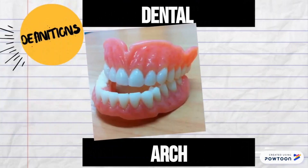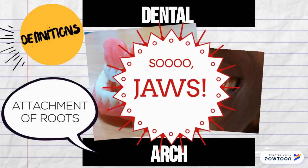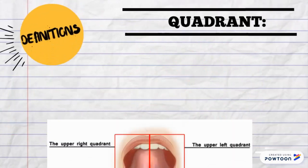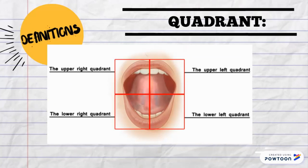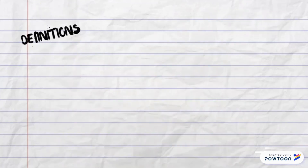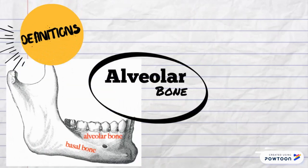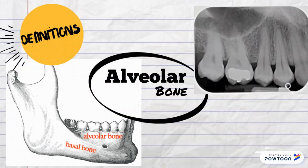Number three: what are quadrants? They represent sections of one side of a jaw, either maxillary or mandibular — hence upper or lower, left and right. They are the geographic locations of teeth in the oral cavity. Number four: what is the alveolar bone? Alveolar bones are the supporting structures of the teeth that locate a tooth's position in its socket and secure it.